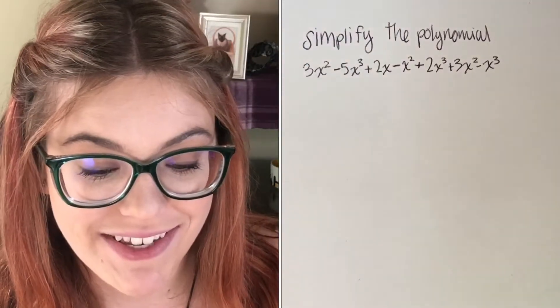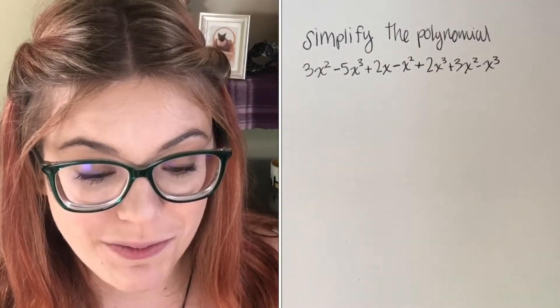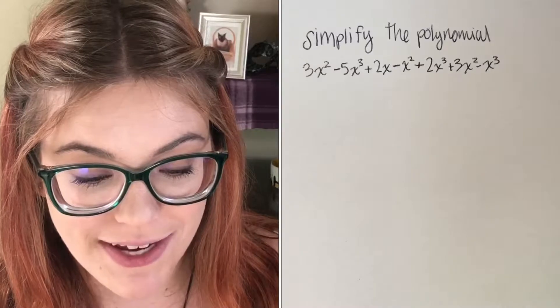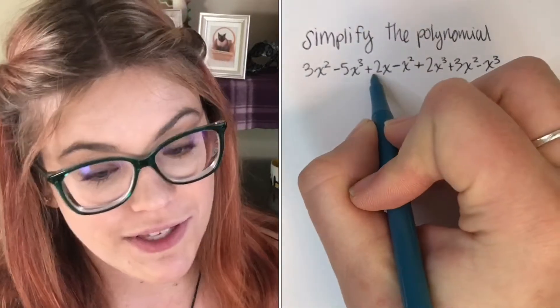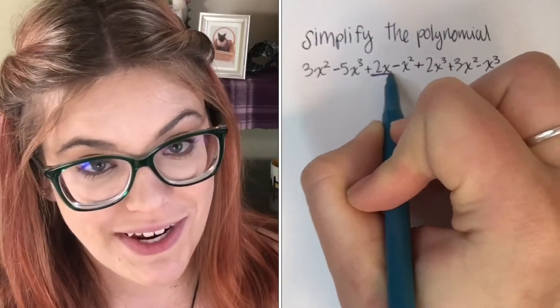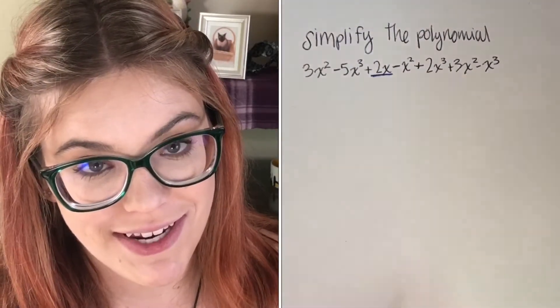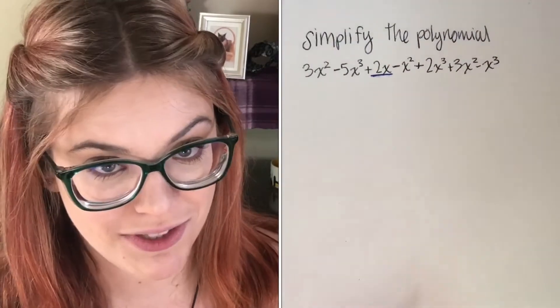Okay, I have my glasses, now we can do this. So our polynomial is 3x squared minus 5x cubed plus 2x minus x squared plus 2x cubed plus 3x squared minus x cubed.